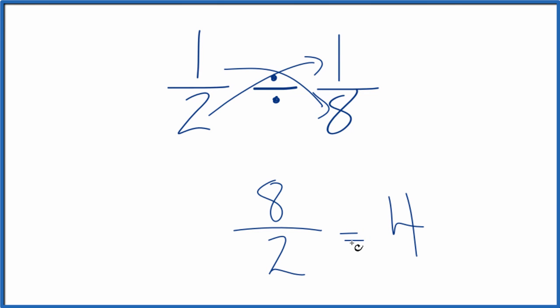This is really the same thing we did in the previous method, just a few different steps. This is Dr. B dividing 1 half by 1 eighth to get 4.